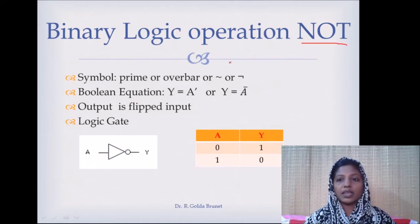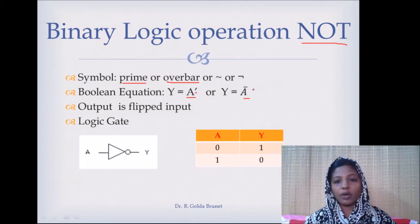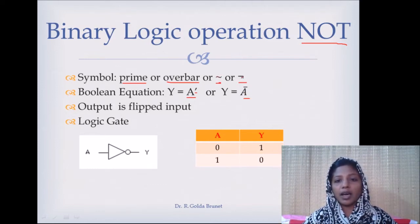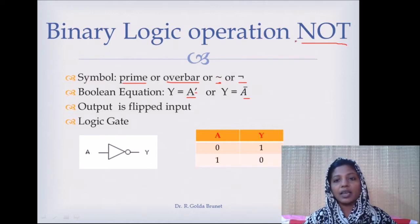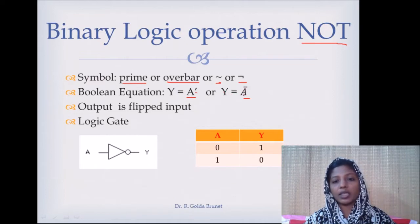The first operator is the NOT operator, and this is a unary operator, meaning it operates on a single input. The NOT operator is indicated by a prime symbol, an overbar, a tilde symbol, or a negation symbol. We say negation A or tilde A to represent the NOT operation, which is basically the complement operation.